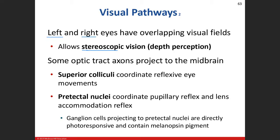Going through our visual pathways: we have the optic nerve, the two optic nerves converge at the optic chiasm, and after the optic chiasm we have our optic tracts. Those optic tracts project axons to the superior colliculus — the top two of the four bumps on the back of the midbrain, part of the corpora quadrigemina. The superior colliculi are responsible for reflexive eye movements, like watching a tennis ball being volleyed back and forth.